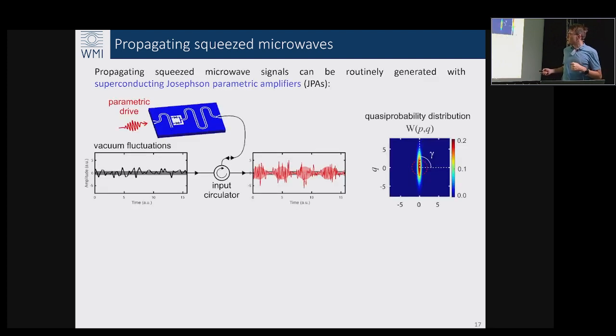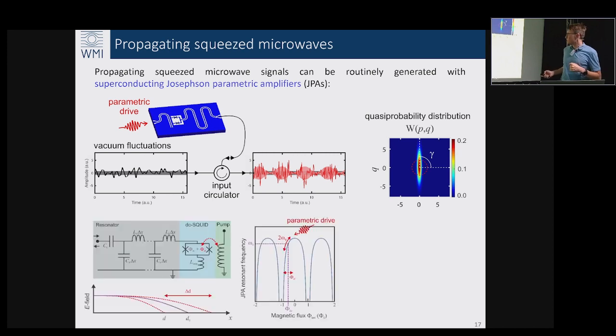We generate such states routinely nowadays by using so-called superconducting Josephson parametric amplifiers which are nothing else but tunable resonators. Tunability is achieved by using Josephson junctions in superconducting rings. When we apply magnetic field through this ring with two Josephson junctions it changes the inductance, so the frequency of the JPA changes as a function of applied magnetic flux and periodically.